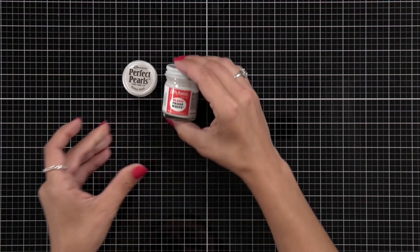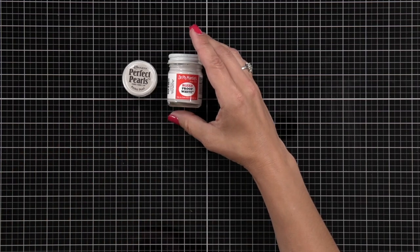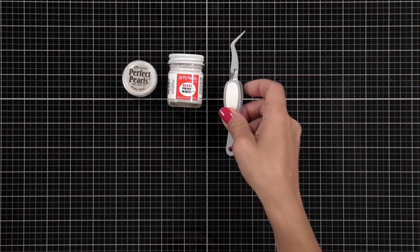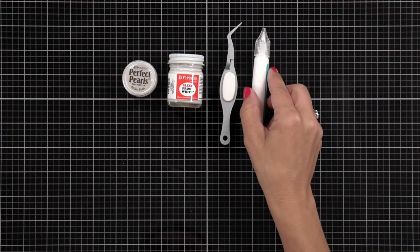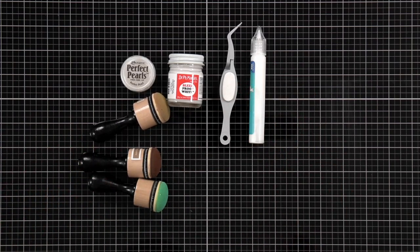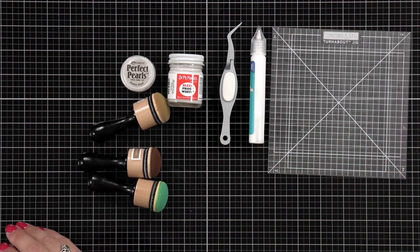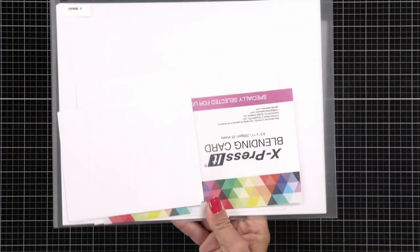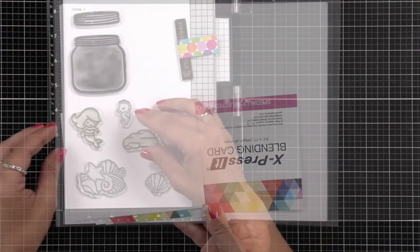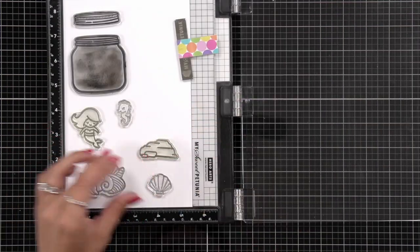I also want to show you some of the other supplies that I'll be using. You can substitute these out for what you may have on hand, but I have some Perfect Pearls, some white paint, my tweezers, my liquid glue, and I have the dome foam blending tools for my oxides. I also have a sticky mat. I have some white cardstock and just a grip surface, and I'll do my alcohol ink coloring on Express It cardstock.